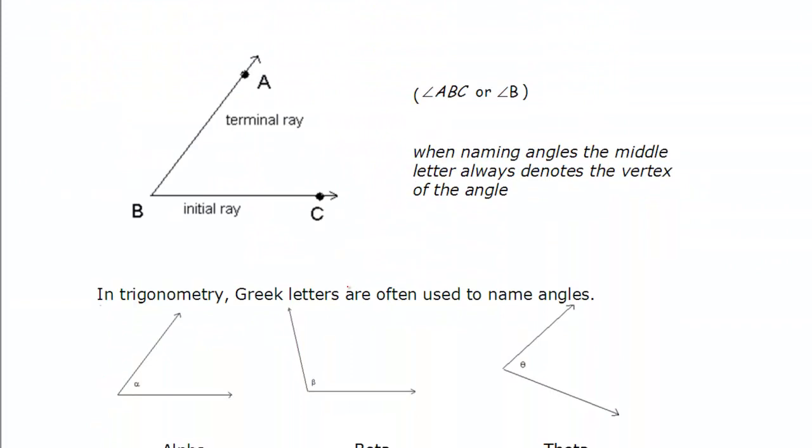So here's a sketch of an angle. We have the initial ray where it starts, and then it would go up like this to a terminal ray where it finishes. When we name the angle, we always name with the vertex, so that endpoint here, in the middle of the name. So this would be angle ABC, or CBA, or just angle B. So any of those would be an acceptable name of this angle, as long as B is in the middle.